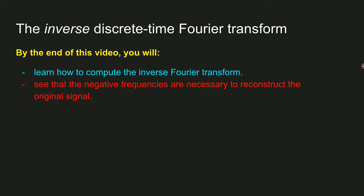The forward Fourier transform, which is what you've learned so far, gets you from the time domain to the frequency domain using complex sine waves. The result of the Fourier transform is the series of Fourier coefficients, which tell you how much amplitude and with which phase the signal matches the complex sine wave at each frequency.